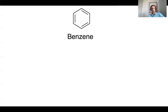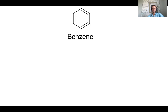Benzene is shown here in the center — it's that classic simplest aromatic structure. It's a cyclic molecule that is fully conjugated around the ring and contains 4n+2 pi electrons. In this case we have 6 pi electrons, satisfying that 4n+2 rule. So benzene is at the core of both the phenyl and the benzyl group.